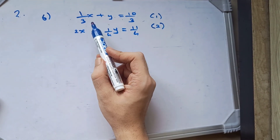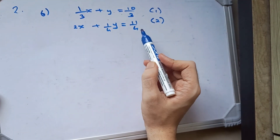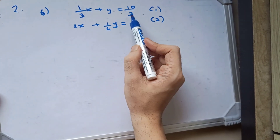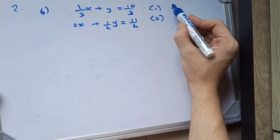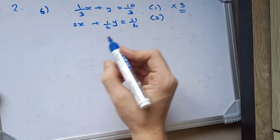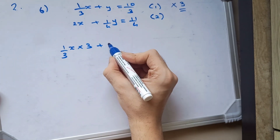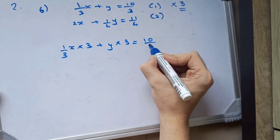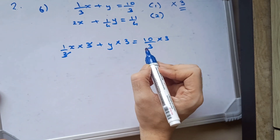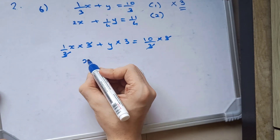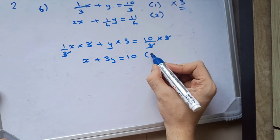Let's look at our next sum. Here we have 1 upon 3x plus y is equal to 10 upon 3, and 2x plus 1 upon 4y is equal to 11 upon 4. As you can see, this has denominator 3. So whenever you get a sum like this, you multiply the entire thing by 3. So if I multiply this entire thing by 3, the 3s cancel out, and we get x plus 3y is equal to 10. This will be equation 3.